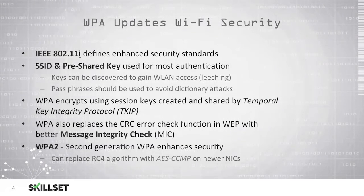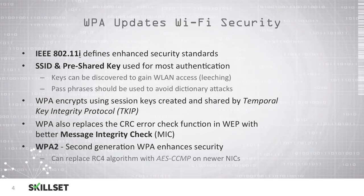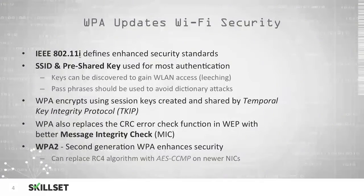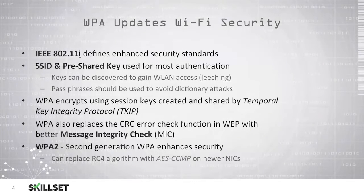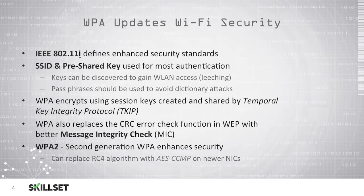WPA was introduced as an improvement on WEP, and WPA stands for Wi-Fi Protected Access. WPA encrypts using session keys that are created and shared using TKIP, or Temporal Key Integrity Protocol. WPA also replaced a CRC error check function in WEP with a better and more improved message integrity check. WPA2 was released as an improvement over WPA, enhancing security by replacing the RC4 algorithm with a much stronger AES-CCMP, supported on newer network interface cards.